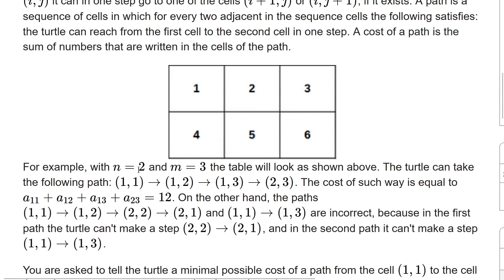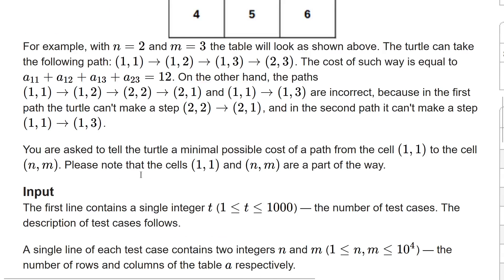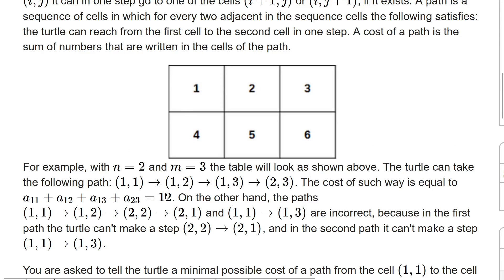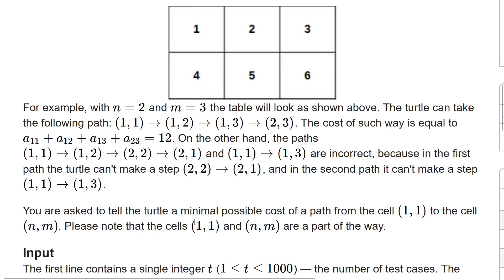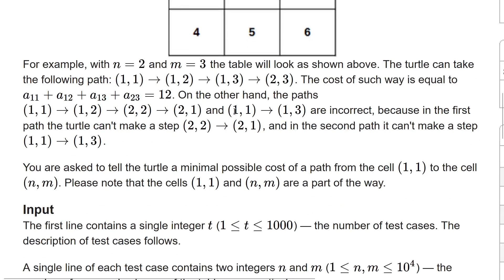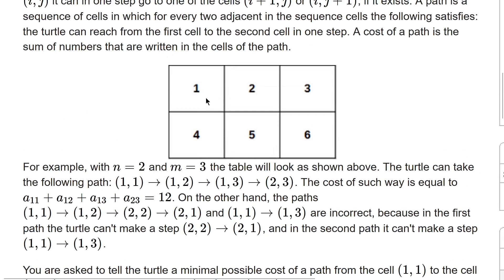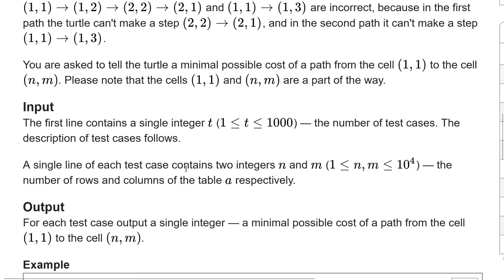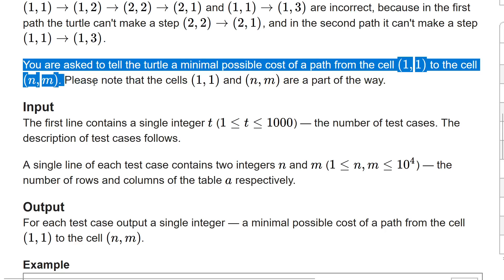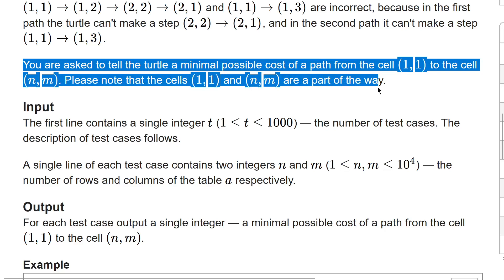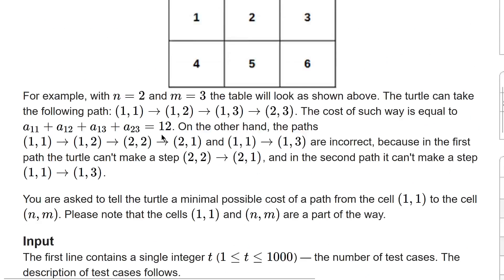You can read the examples here. If the turtle follows the path (1,1) → (1,2) → (1,3) → (2,3), it costs 1+2+3+6 = 12. The question asks for the minimum possible cost of a path from cell (1,1) to cell (n,m). Note that cells (1,1) and (n,m) are included in the sum.